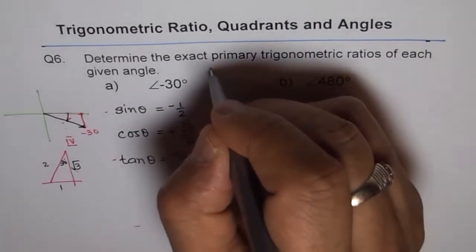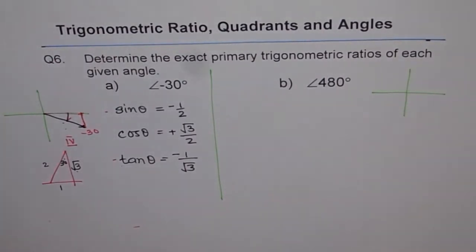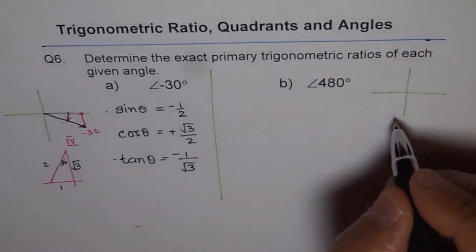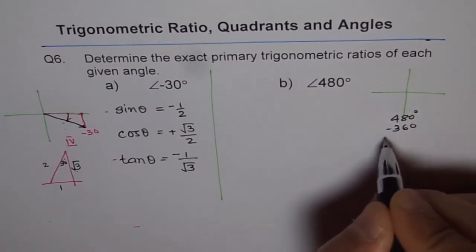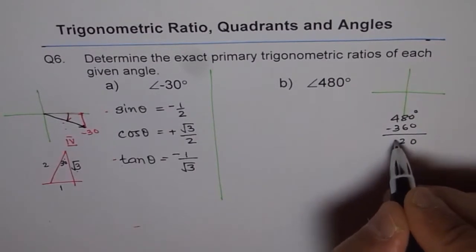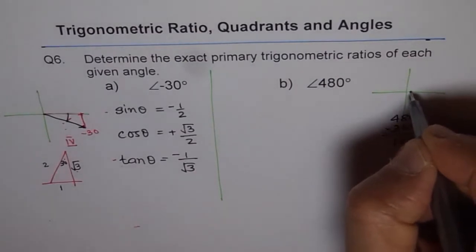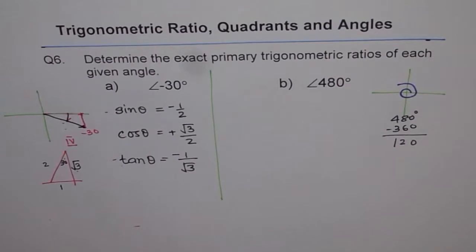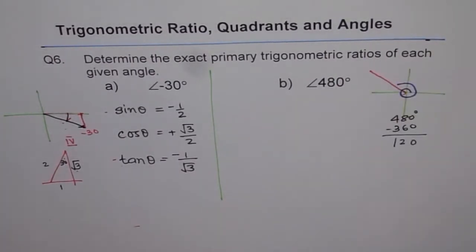Now let's look into part B. We have 480 degrees. 480 degrees means 480 degrees minus 360 - one full circle and then how much more? If we take out, we get 120 degrees. That means one full circle and then like this. So you land up finally in quadrant 2.